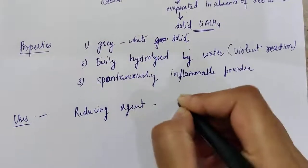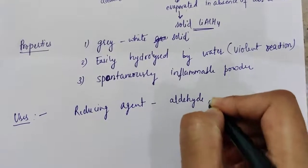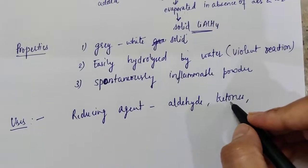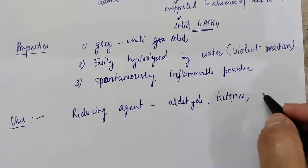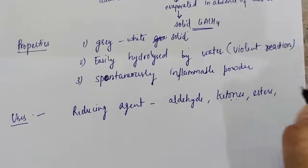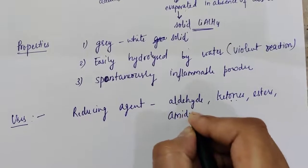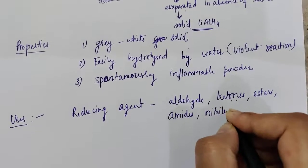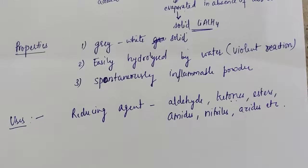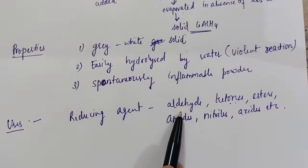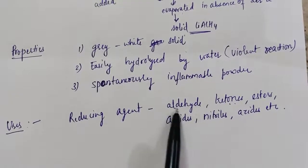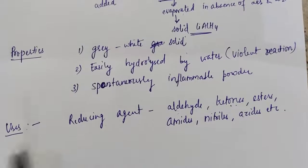Lithium aluminium hydride is used in the reduction of aldehydes and ketones. Aldehydes and ketones were also reduced by NaBH₄, but along with aldehydes and ketones, lithium aluminium hydride can also reduce esters, amides, and nitriles. As we discussed with sodium borohydride, lithium aluminium hydride is a stronger reducing agent compared to sodium borohydride.